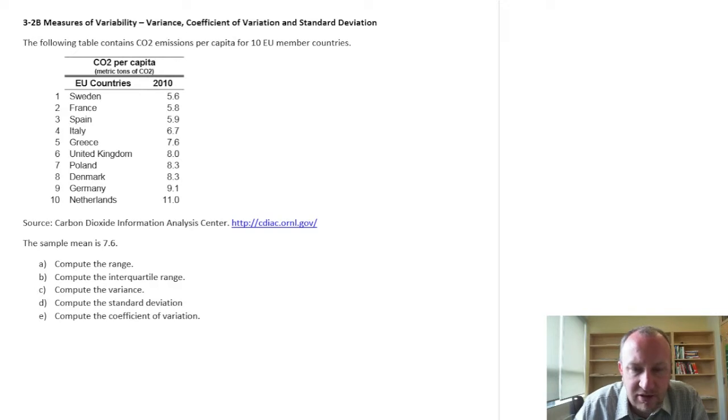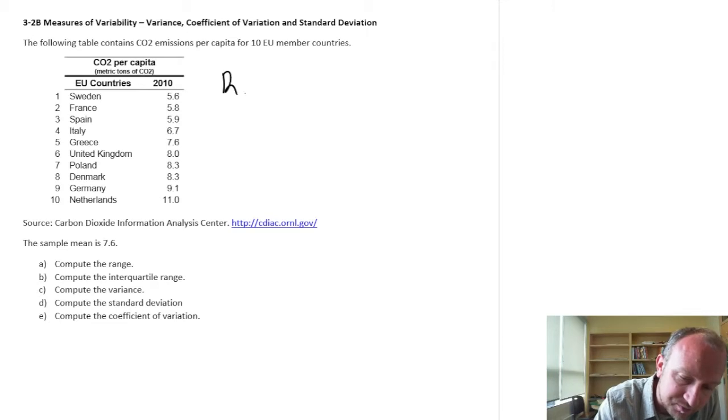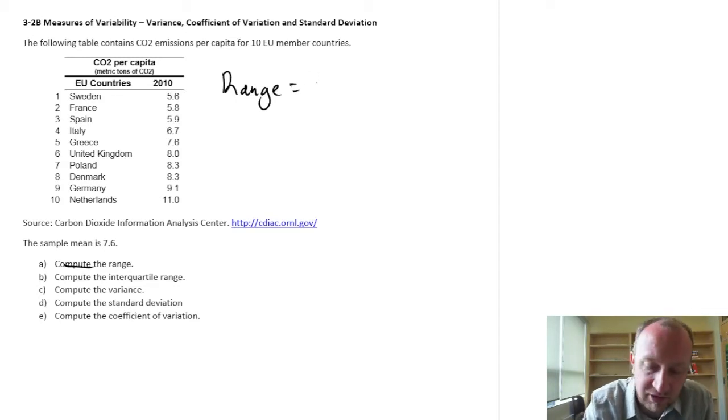The first part is computing the range. As far as measures of spread go, the range is really the most simplistic. It uses the least amount of information and provides relatively little information in return. Not to say it's not useful, but it's just the simplest. The formula for range is simply the difference between the largest value and the smallest value in the data set.